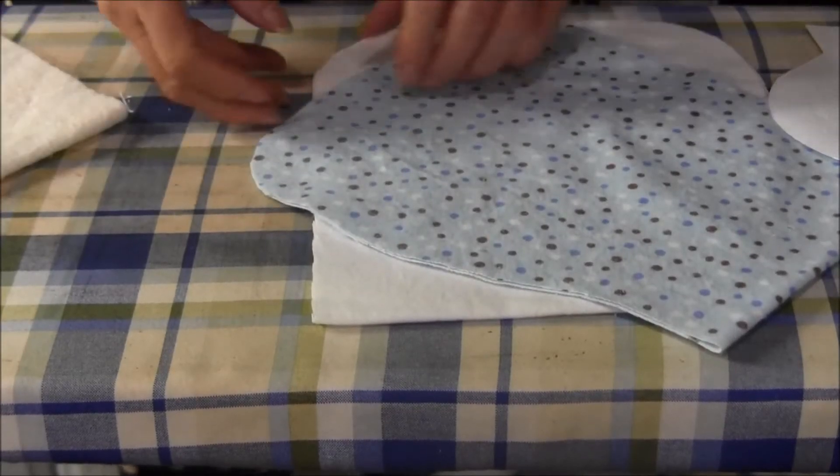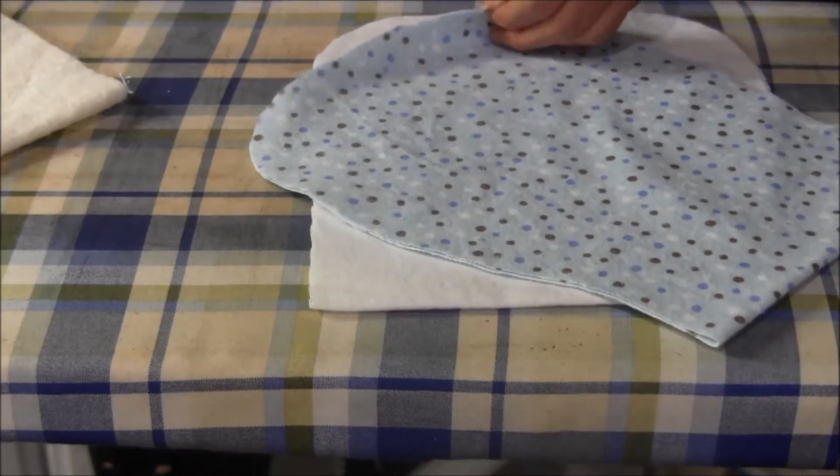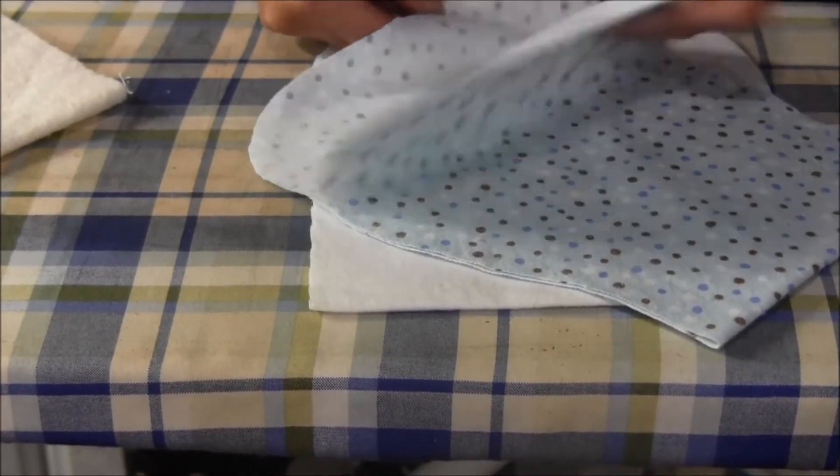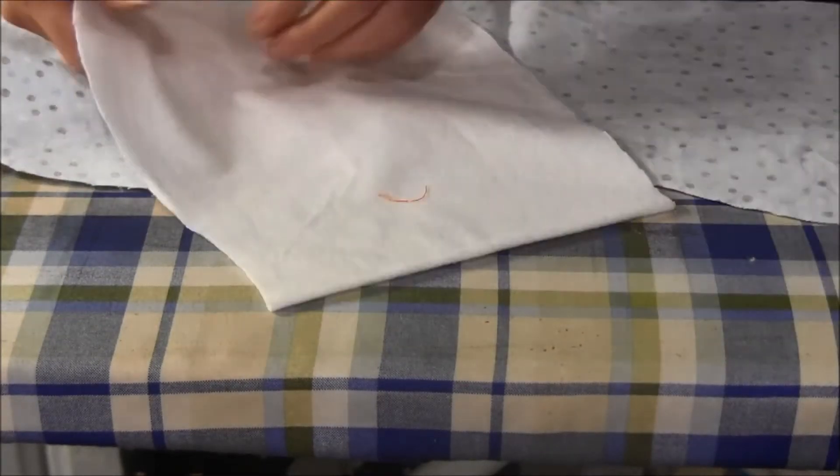The first thing you're going to do to construct it is place the two flannel fabrics right sides together.